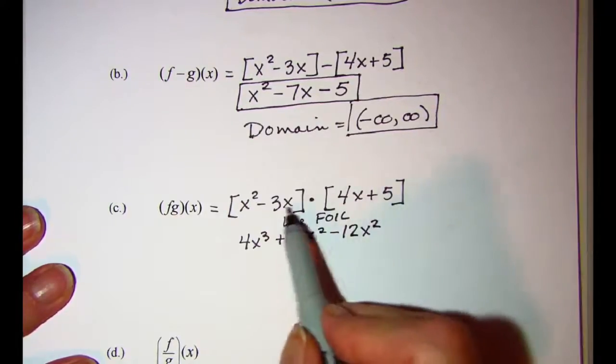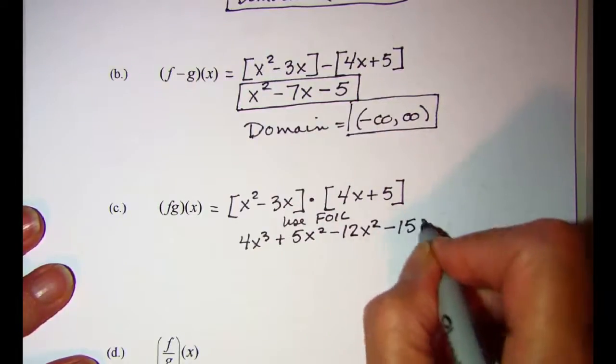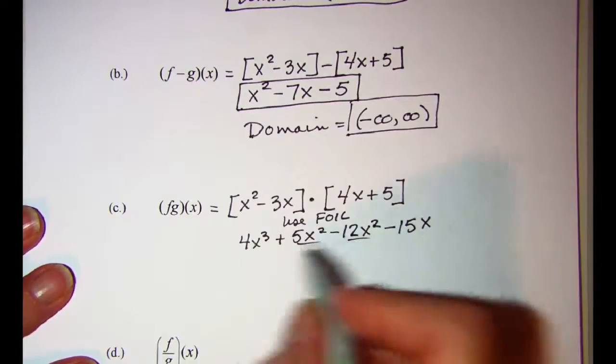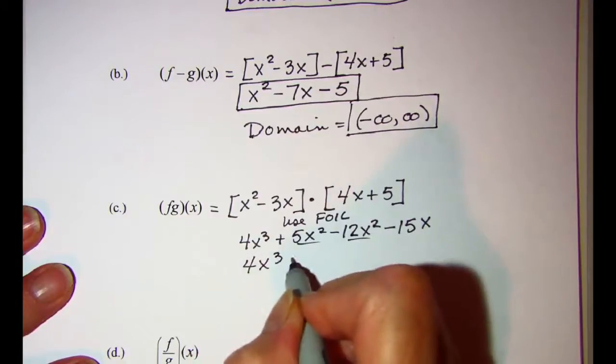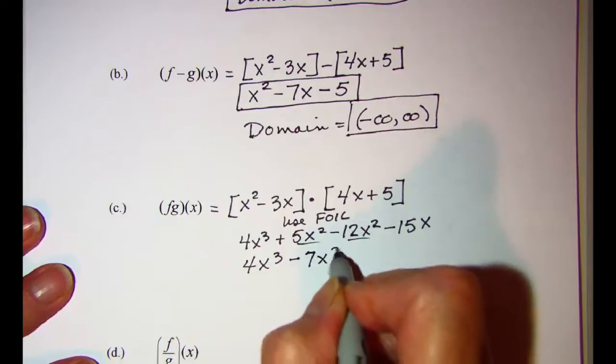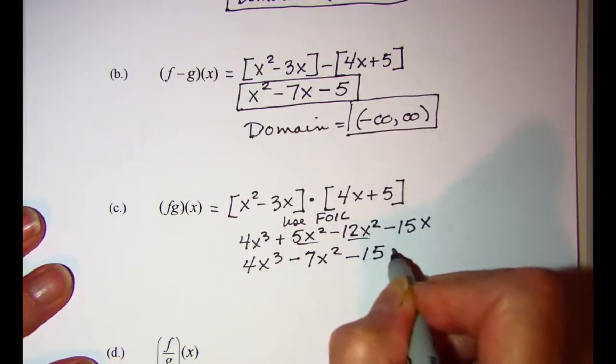Negative 3x times 4x is negative 12x squared, and negative 3x times 5 is negative 15x. Combining our two middle terms, we'll have 4x cubed minus 7x squared minus 15x.